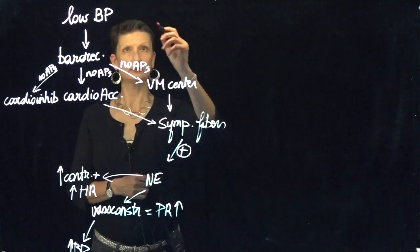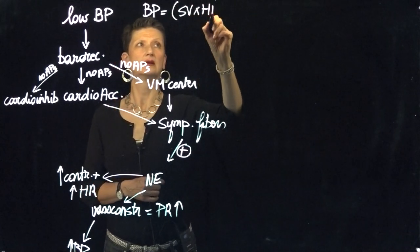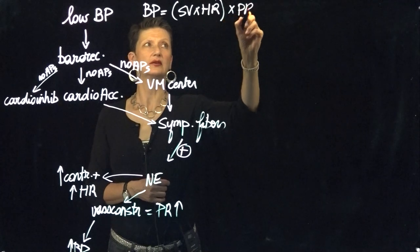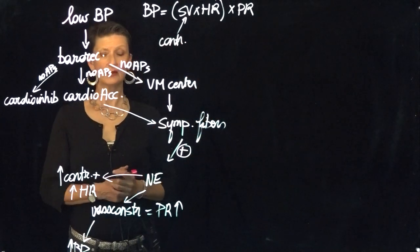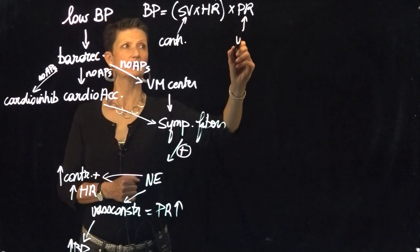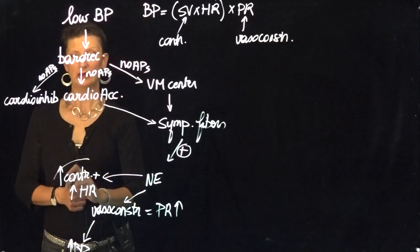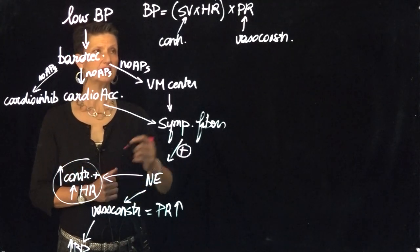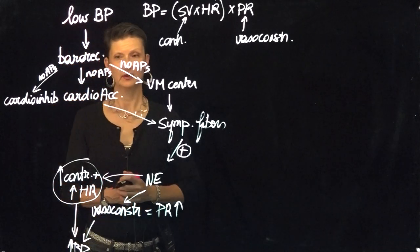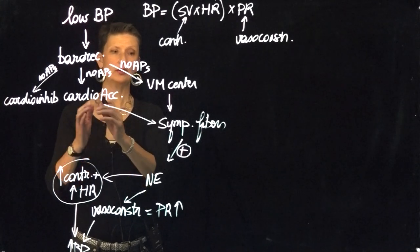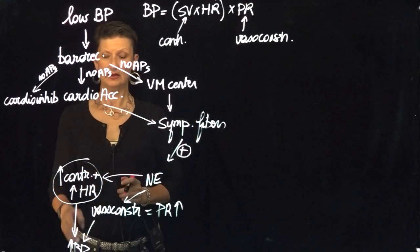Remember, our blood pressure equals stroke volume times heart rate times peripheral resistance. So for stroke volume, we're focusing on contractility, and then we have heart rate, and for peripheral resistance, vasoconstriction and vasodilation — if you go back to the previous video this will make sense. So if we increase heart rate or contractility, that is going to help us bring up our blood pressure. Our cardioacceleratory center is going to get its sympathetic fibers to secrete norepinephrine onto the heart to increase our blood pressure.